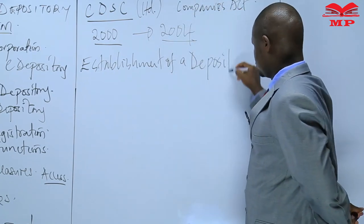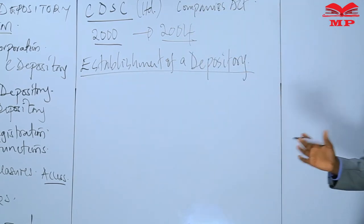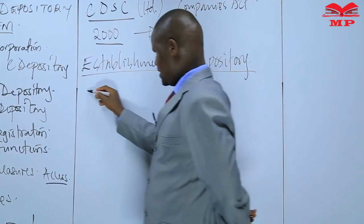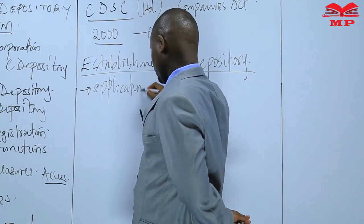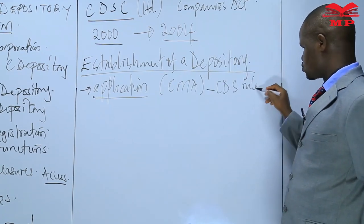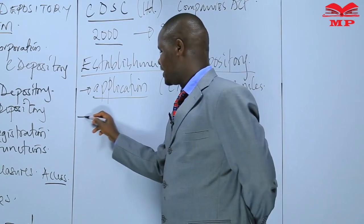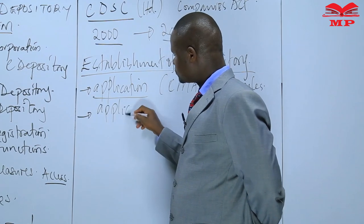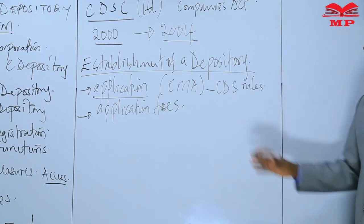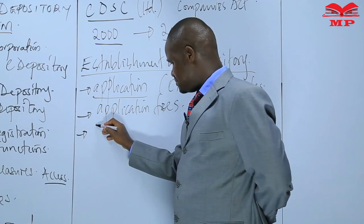Any corporation registered under the Companies Act that wishes to be licensed by the Capital Markets Authority to operate as a depository will be required to make an application to the Capital Markets Authority, consistent with the CDS rules. This is an application for registration as an operator of a depository, and it comes with application fees — the CMA collects fees every time anything has to be registered.